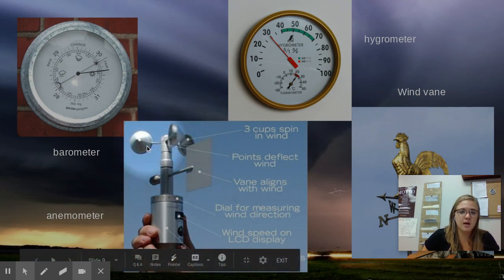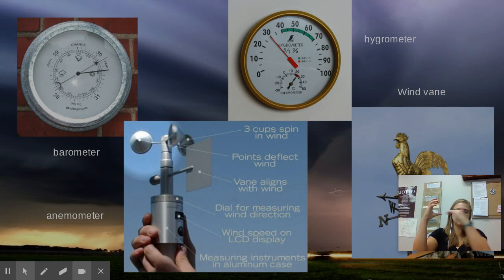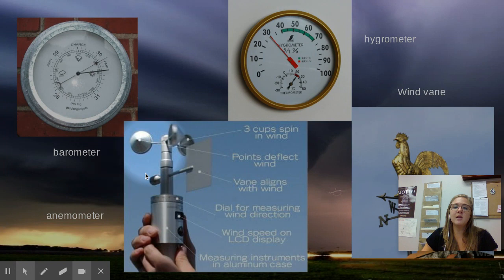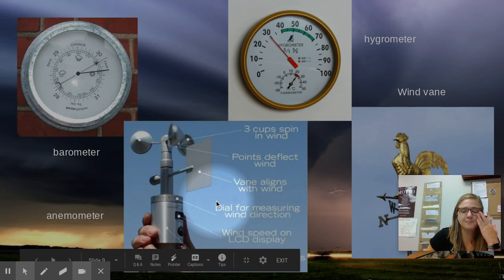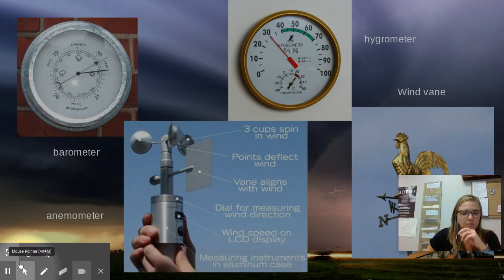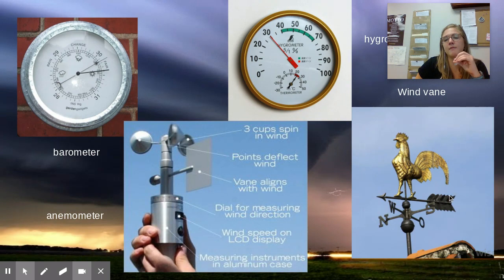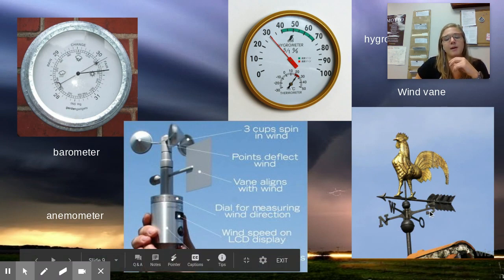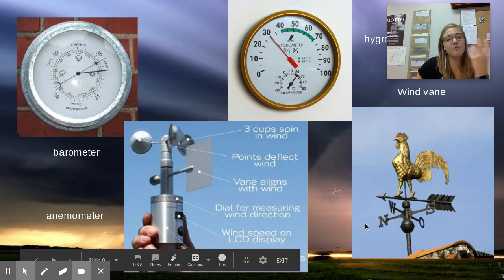Here we have an anemometer — it's cool looking. Up on the top there are cups that serve to catch the wind; as the wind blows into them, the cups move and spin around. The faster they spin, the higher the speed recorded at the bottom — maybe seven miles per hour, 13 miles per hour, or kilometers per hour. Then down here is the example of a wind vane. You can usually find them on tops of houses, patios, or barns. They just point to the direction from which the wind is coming — in this picture it looks like the wind is blowing from the northwest.